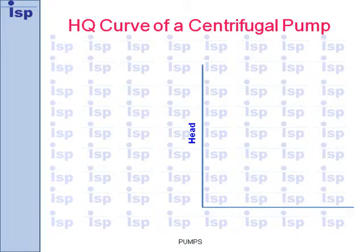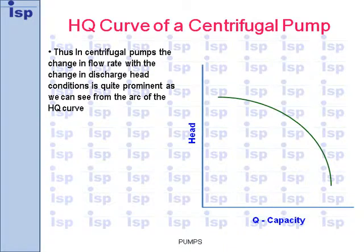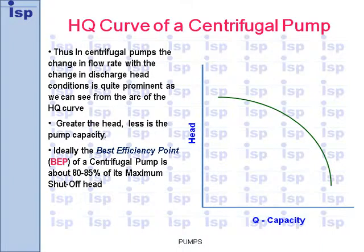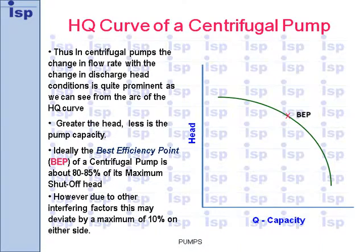Head versus capacity. Thus, in centrifugal pumps, the change in flow rate with the change in discharge head conditions is quite prominent, as we can see from the arc of the HQ curve. Greater the head, less is the pump capacity. Ideally, the best efficiency point of a centrifugal pump is about 80–85% of its maximum shut-off head. However, due to other interfering factors, this may deviate by a maximum of 10% on either side.